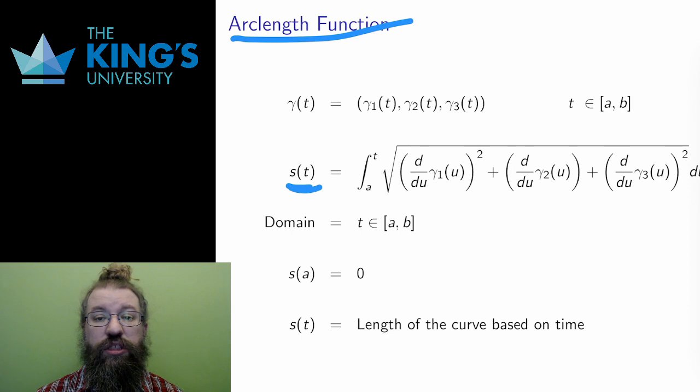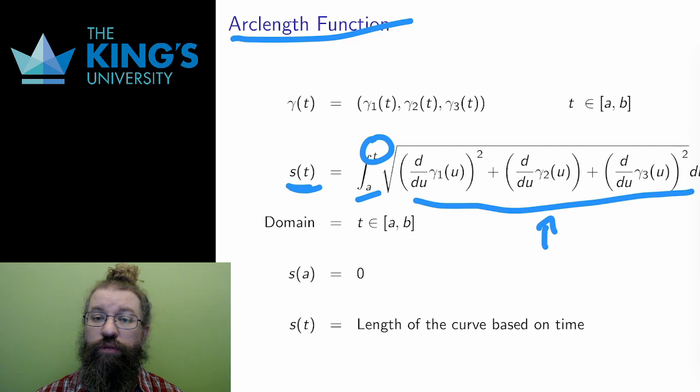The function is defined as the arc length, but now t is just the upper bound of the integral, calculating the length but only up to some time t. And since I now use t outside the integral, I need to use another variable inside the integral to avoid confusion, and the conventional choice here is u.